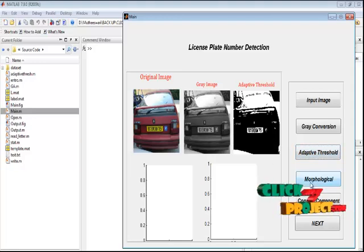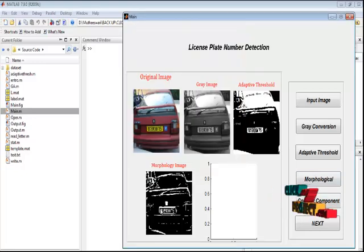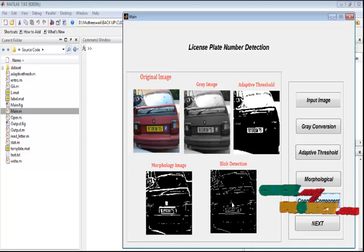By pressing the morphological button, we can perform the morphological operation, that is dilation and erosion process. The morphological image is displayed in axis four plot. By pressing the connected component button, we can perform the blob detection operation. Here the blobs, that is closed regions, are detected. By pressing the next button, we can move on to the output window.